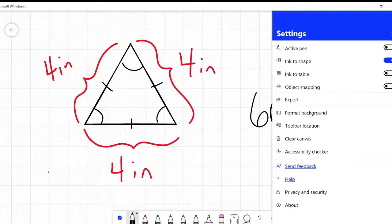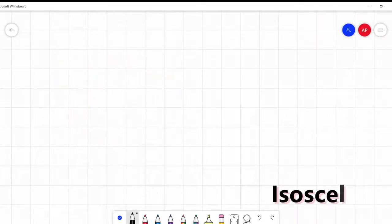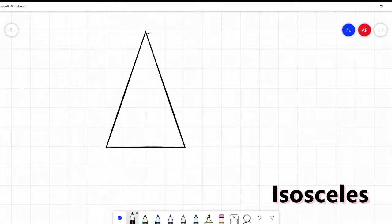Next, we have isosceles. Gotta love these names, right? An isosceles triangle is a triangle with two equal or congruent sides. You'll hear both of those words, equal or congruent. Two congruent sides. That is isosceles.